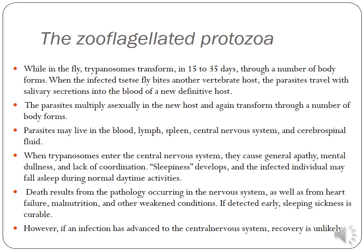When an infected tsetse fly bites a vertebrate host — human or mammal — the parasite again transforms and may live in the blood, lymph, spleen, or central nervous system. When Trypanosoma enters the central nervous system, it causes general apathy, mental dullness, and lack of coordination — symptoms we call sleeping sickness.